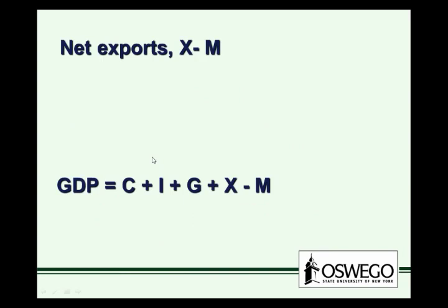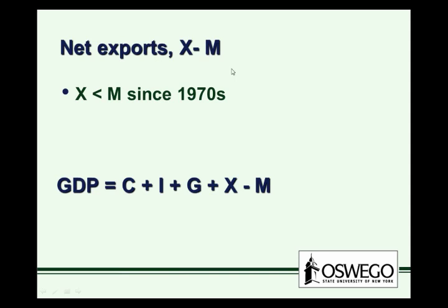The final component, net exports, refers to the difference between exports and imports. Exports are what we produce and sell to the rest of the world; imports are what the rest of the world sells to us. Since the 1970s, the United States has exported less than it imports, so net exports have really been negative since the 1970s.